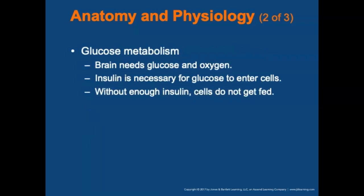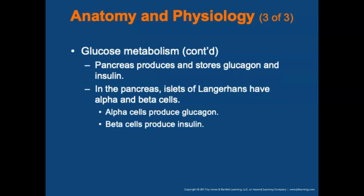Let's talk about glucose metabolism. The brain needs two things to survive: glucose and oxygen. Insulin is necessary for glucose to enter the cells — it's like the key that unlocks the cell door. Without enough insulin, the cells do not get fed; they do not get the glucose. The pancreas produces and stores two hormones: glucagon and insulin.